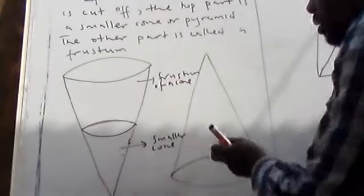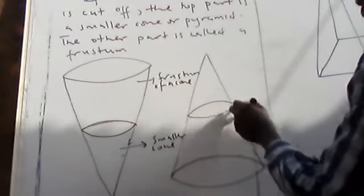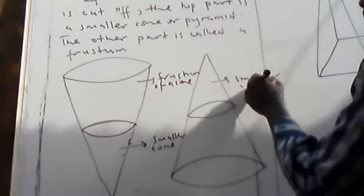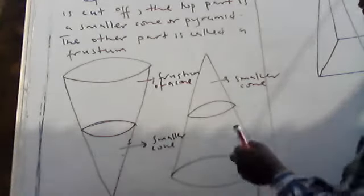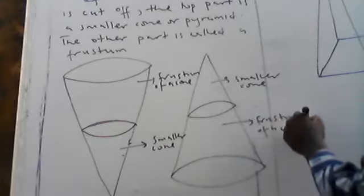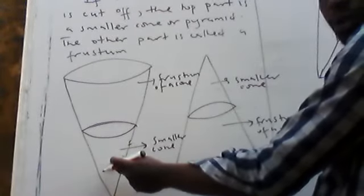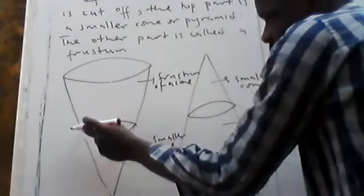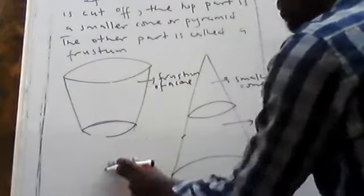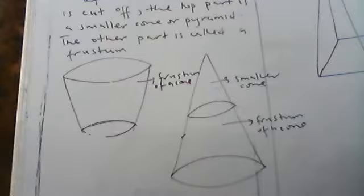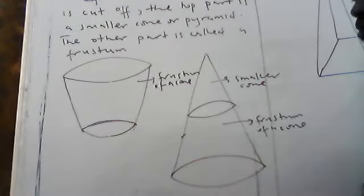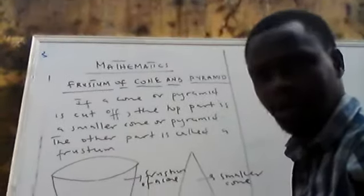Let me start from here. The top part is the smaller cone. When the cone is turned upside down, the smaller cone is at the bottom, and everything here is the bigger cone. The remaining part after cutting is the frustum of a cone. A bucket is an example of the frustum of a cone.